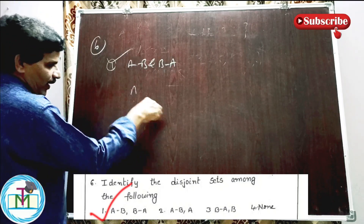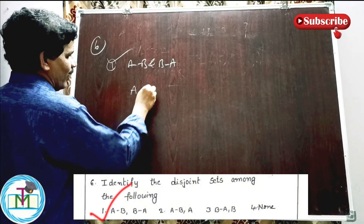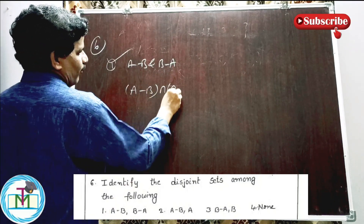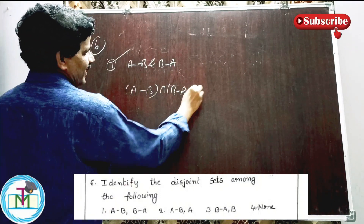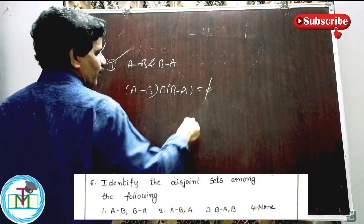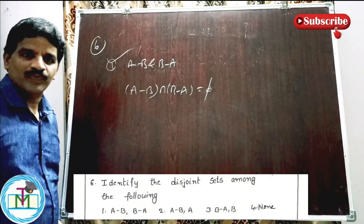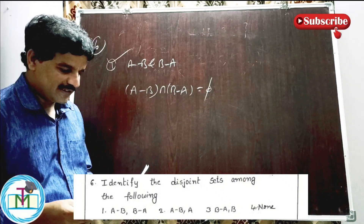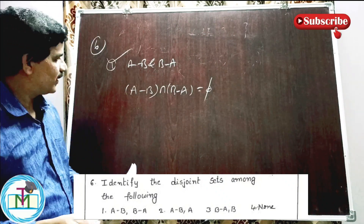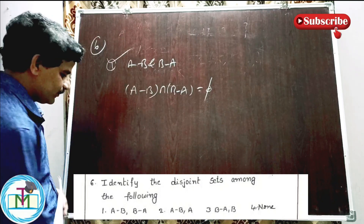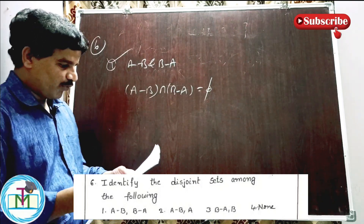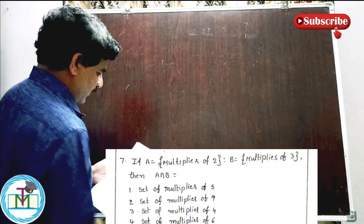If we discuss this, A minus B intersection B minus A is equal to empty set. Therefore option 1 is the right answer.